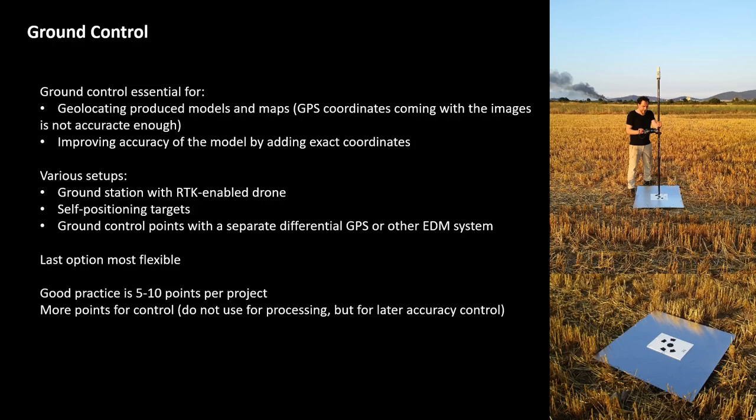Ground control is essential for geolocating produced models and maps, because the GPS coordinates coming with the images are not accurate enough. In addition, it also improves the accuracy of your model, because you are adding exact coordinates — from a photogrammetrical perspective, you are adding exact 3D geometrical information to something that is modeled 3D information, which improves the accuracy of your final product.